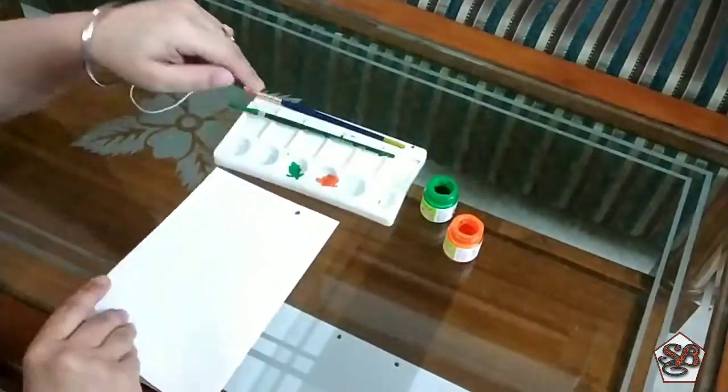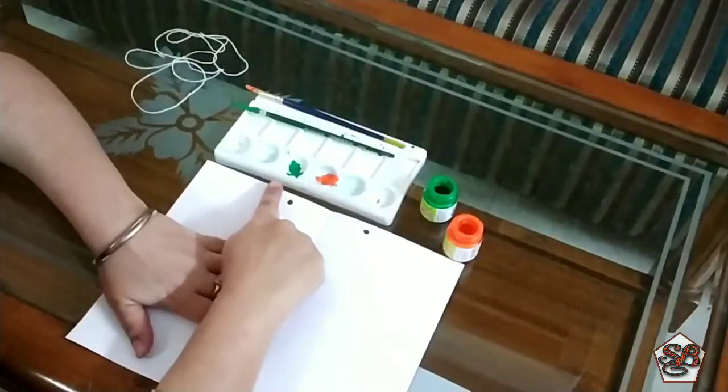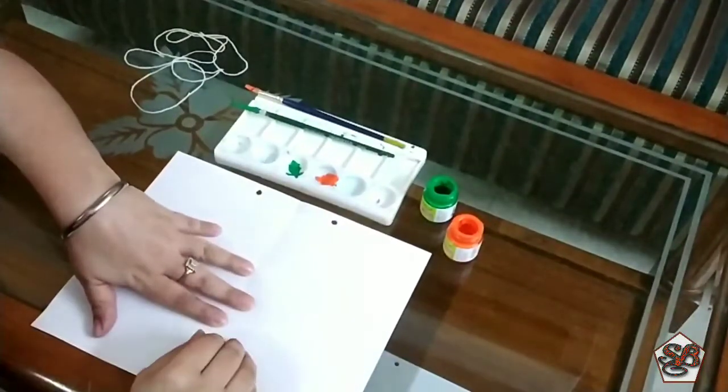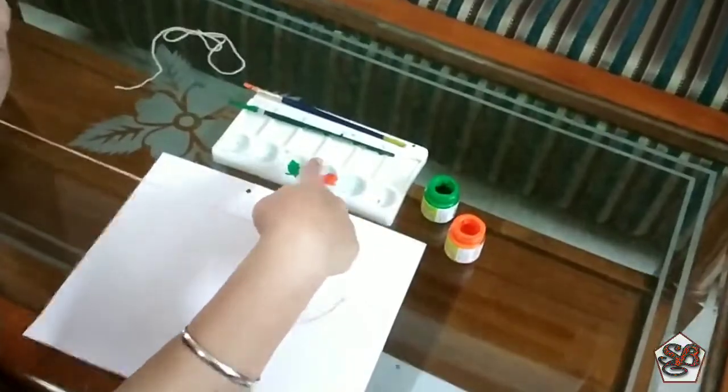I have taken out the colors here. I'm using orange and green color as Independence Day is approaching and my sheet is white. So the first step is that we take out the colors in a palette.